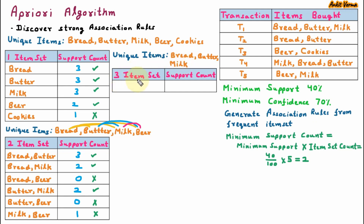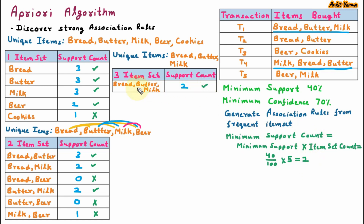Minimum support count must be 2, so combinations with support count greater than or equal to 2 are accepted, and those below 2 are discarded. The accepted combinations are bread-butter (3), bread-milk (2), and butter-milk (2). From these accepted pairs, the unique items are bread, butter, and milk. From these unique items, we can generate only one possible 3-itemset: bread, butter, and milk. Its support count is 2, which meets the minimum, so it is accepted. Since there are only 3 unique items, we cannot generate a 4-itemset, so we stop here.